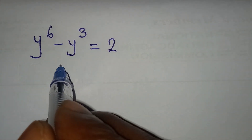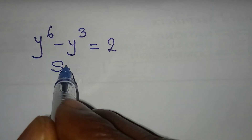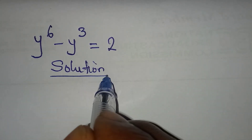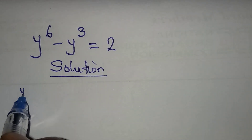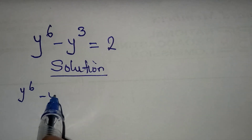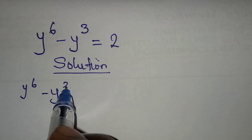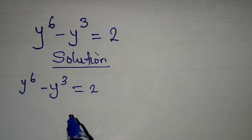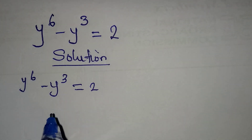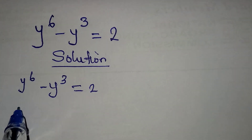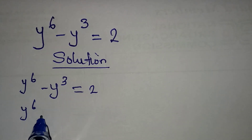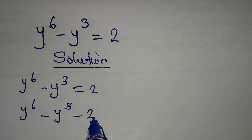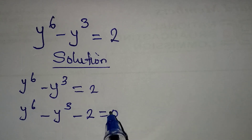Hello everyone, let's solve this problem very quickly. We have y to the power of 6 minus y to the power of 3 equals 2. The first step is to bring everything to the left, so we have y to the power of 6 minus y to the power of 3 minus 2 equal to 0.